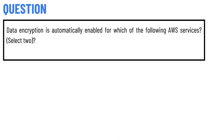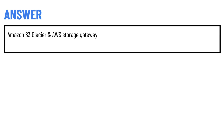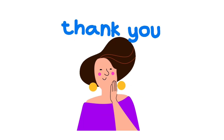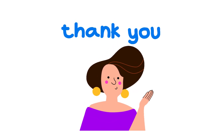Today's question is: data encryption is automatically enabled for which of the following AWS services? Select two. The correct answers are Amazon S3 Glacier and AWS Storage Gateway.